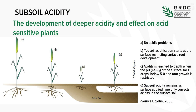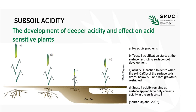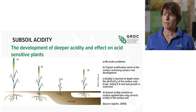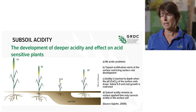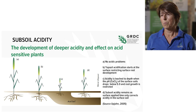One of the reasons why we're seeing such issues with subsurface acidity in that 10 to 20 centimetre soil depth is because we haven't been putting on enough lime. So we really need to start thinking about calculating lime rates based on what our soil acidity is in the top 0 to 10, 10 to 20, and also 20 to 30 centimetres.